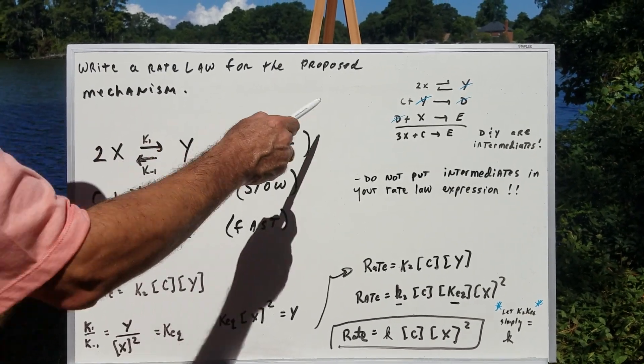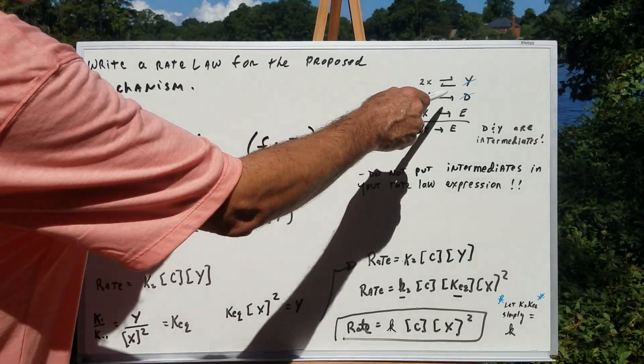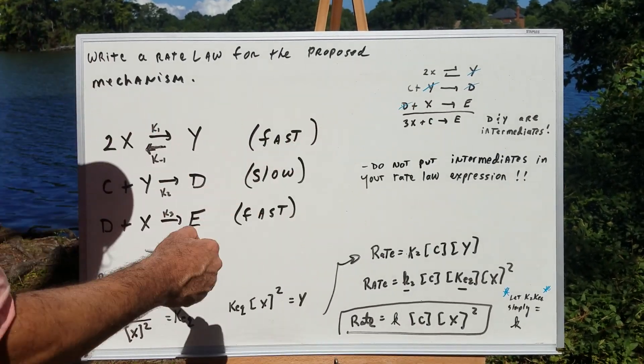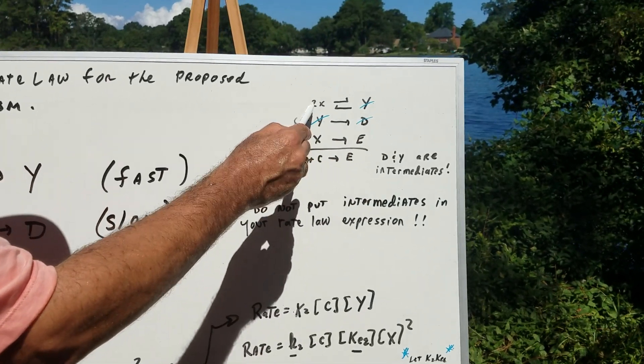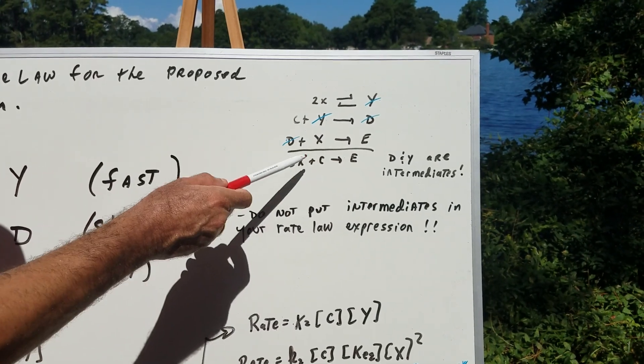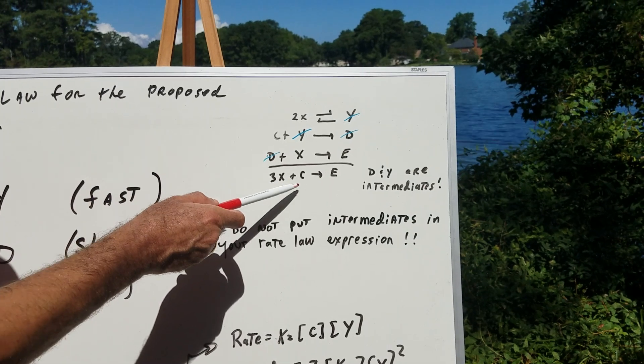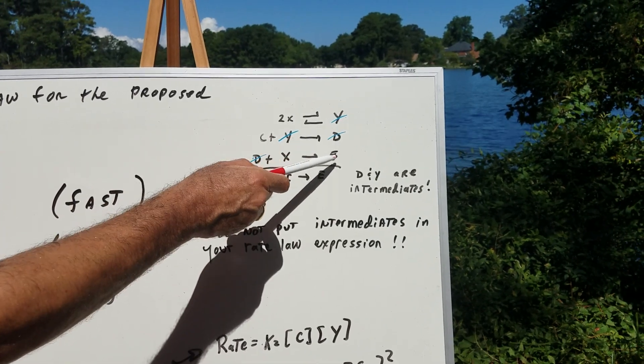But what I would do is go off to the side and write the overall reaction. You had 2X goes to Y, C plus Y is D, and D plus X is E. But if you notice, Y cancels and D cancels. And when you bring it down, you have 2X and X is 3X. And then there's the C, and then you just got E.